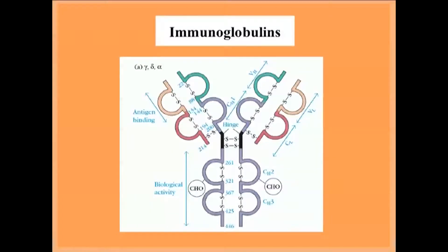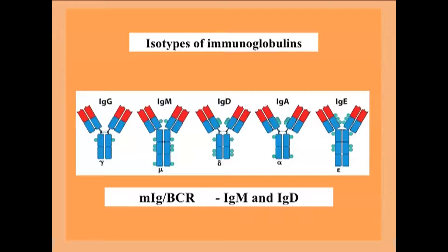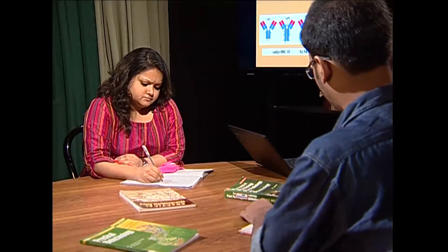Looking at immunoglobulin structure, several homologous regions of 110 amino acids are present in both the heavy chain and the light chain. About 60 amino acids form a loop via intra-chain disulfide linkage in each homologous region. If the constant region sequence is alpha, the immunoglobulin is IgA; if mu, it is IgM; if delta, IgD; if gamma, IgG; and if epsilon, IgE. On a B-lymphocyte surface, only IgM and IgD are present — no other isotypes are found in membrane-bound condition on a mature B cell.